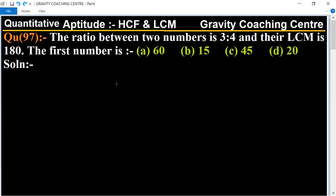The ratio between two numbers is 3 is to 4 and their LCM is 180. So the first number is what?